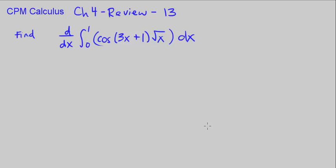This is CPM Calculus, Chapter 4, Review Problem number 13. So here we're asked to find d dx, so the derivative of the integral from 0 to 1 of cosine of 3x plus 1 times square root of x.